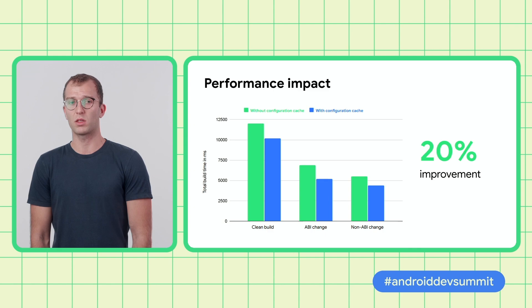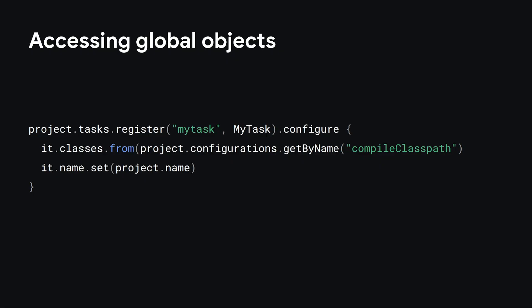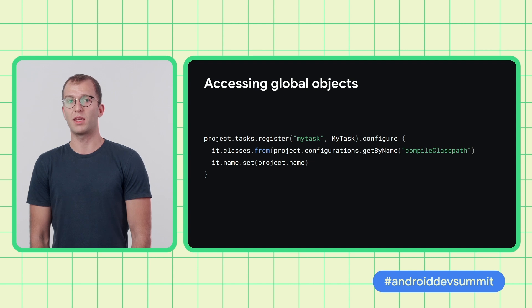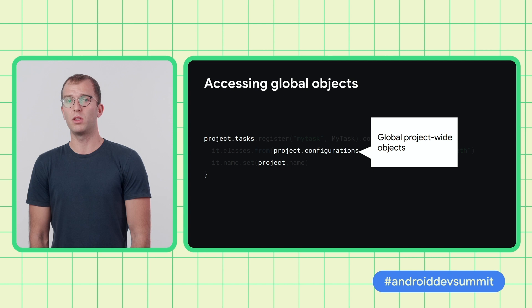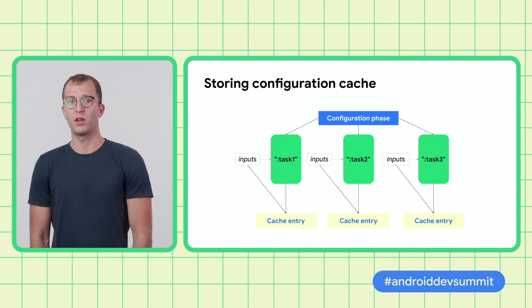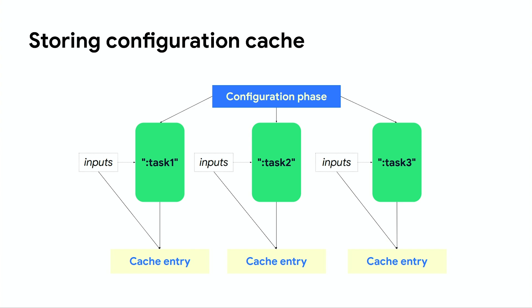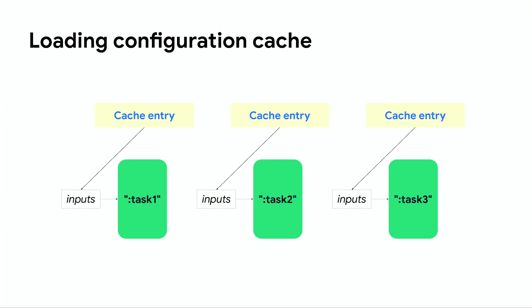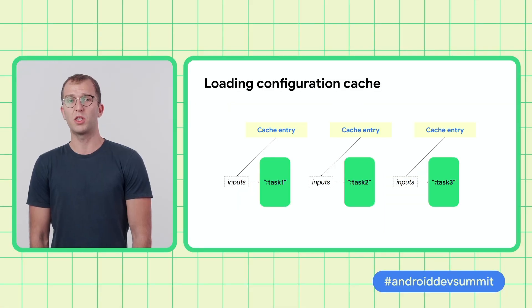Let's take a closer look at how configuration cache works. Before the task graph is computed, we are in the configuration phase. We are using Gradle-provided global objects such as project, task container, and configuration container to create tasks with declared inputs and outputs. In this example where we register a task and configure it, we can see multiple usages of global objects like project.tasks and project.configurations. That's perfectly fine as we are still configuring the build. Once all tasks are fully configured, Gradle computes the final task graph. Configuration cache stores this task graph and serializes the task state. All task inputs need to be of specific Gradle types or serializable. When there is a configuration cache hit, stored configuration cache entries are used to create task instances, and no references to global state are allowed.